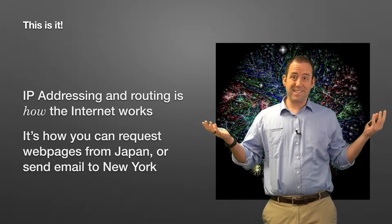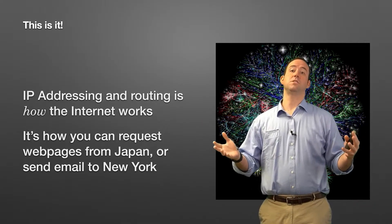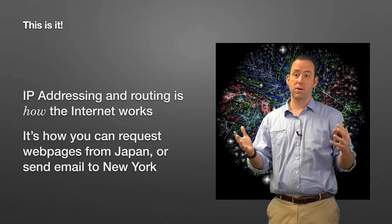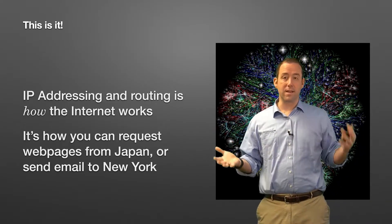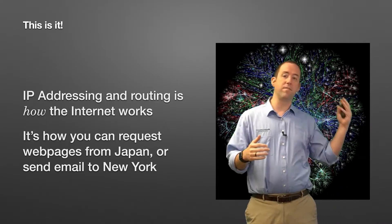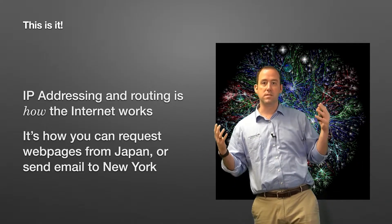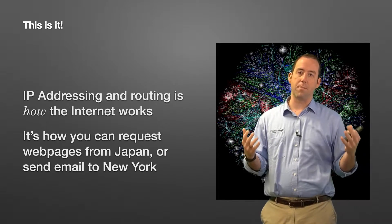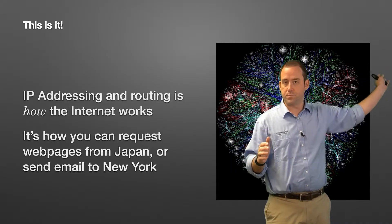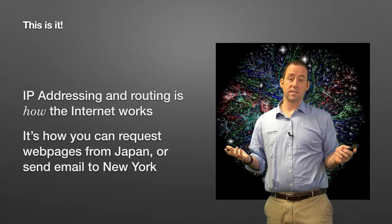Again, this is it — the network layer. Networking. Inter-networking. Connecting networks to each other. This is how the internet works. IP addressing and routing, which are the jobs of the network layer, are how the internet works — how devices are able to talk from New York to Japan, from Utah to Singapore. All of it happens using IP addressing, and all of it happens because the network layer does the routing to get packets across a dozen networks to get from point A to point B, wherever it is that you need to go.